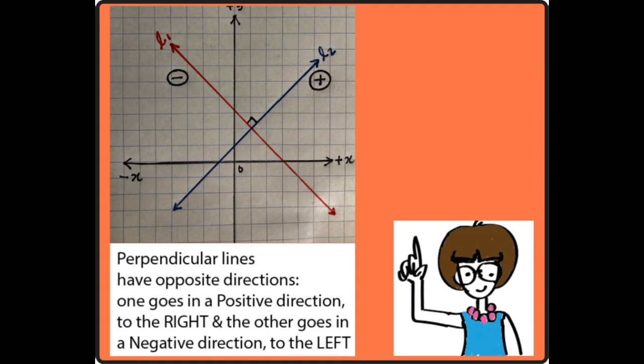Well, perpendicular lines have to have opposite directions. Think about it, one goes in a positive direction to the right side of the number plane, the other goes in a negative direction to the left side of the number plane.